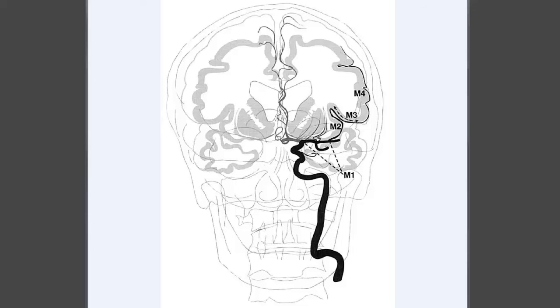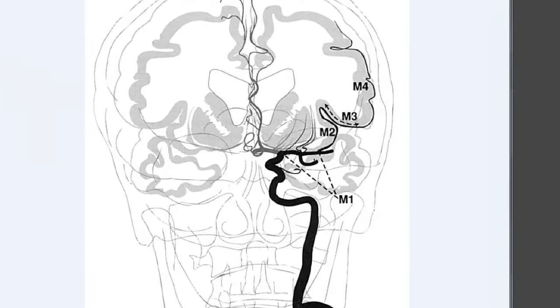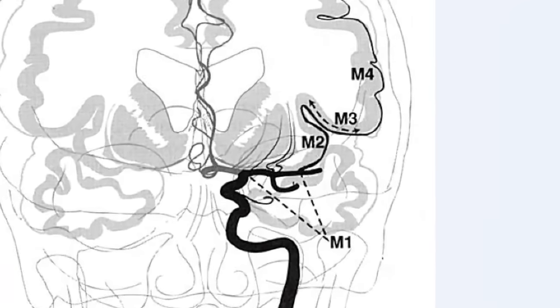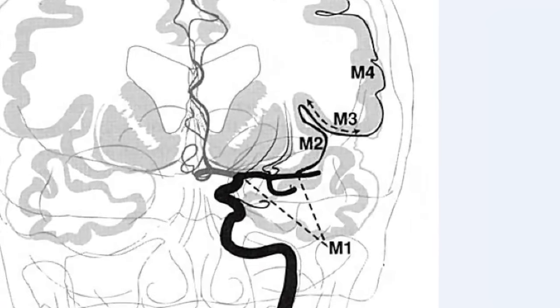This video covers the named segments of the middle cerebral artery, or MCA, specifically the sections that we refer to as M1, M2, M3, and M4.